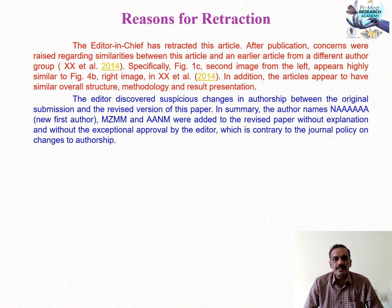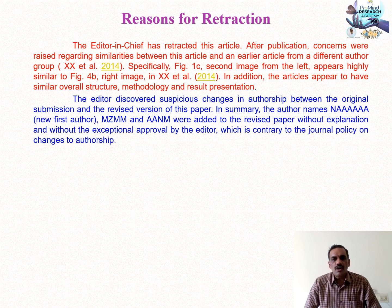The second reason: the editor discovered suspicious changes in authorship between the original submission and the revised version of the paper. Author names were added to the revised paper without explanation. It is not meant that authors cannot be changed after initial submission — there is a provision for including new authors — but without proper information, adding or deleting authors may be a reason for retraction.